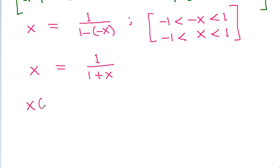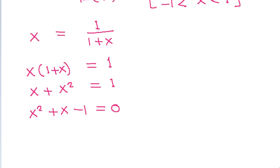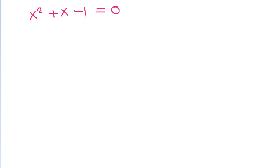Cross-multiplying: x times (1 plus x) equals 1, giving x plus x squared equals 1. Rearranging: x squared plus x minus 1 equals 0. This is a quadratic of the form ax squared plus bx plus c equals 0.